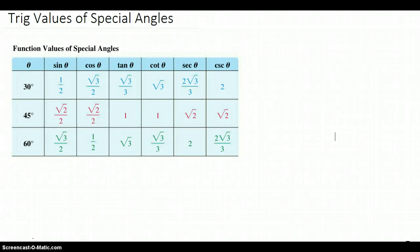Hello, this is Jennifer Martinez, and today we're going to talk about the trig values of special angles. The special angles we're going to talk about are 30, 45, and 60 degrees. In this chart, it shows all six trigonometric values of these special angles.